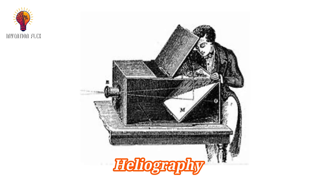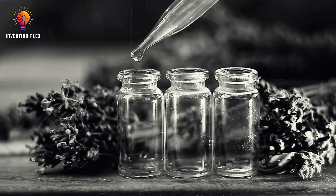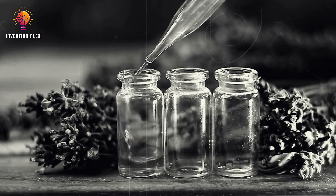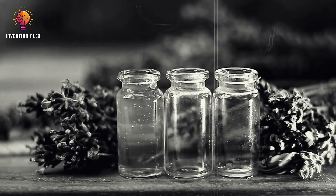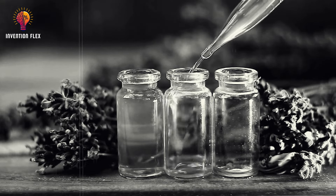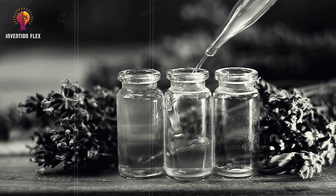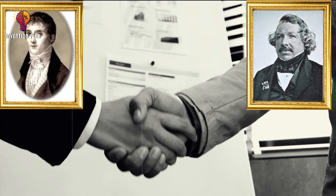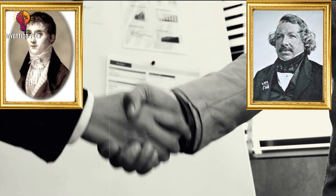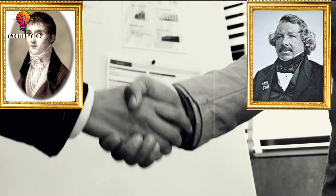He named his method heliography, which translates as 'sun drawing.' Niépce experimented with other materials as well, such as lavender oil distillate, and it seems he was convinced silver was a good choice. He became a partner with Louis Daguerre in 1829 and passed the torch for the next stage in the history of the camera.